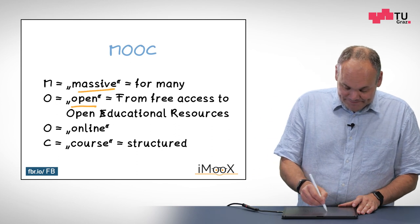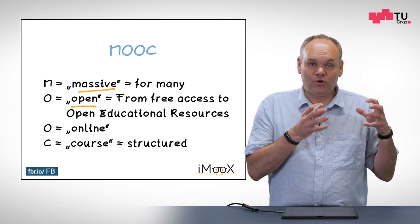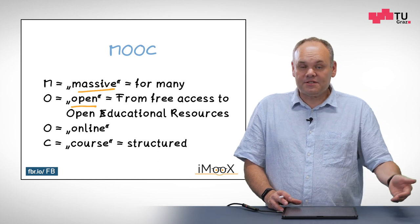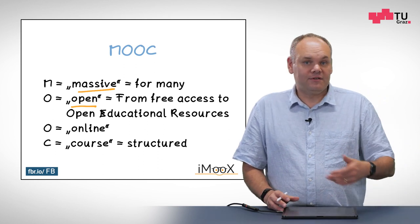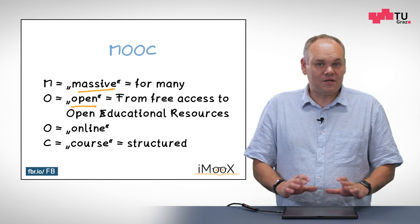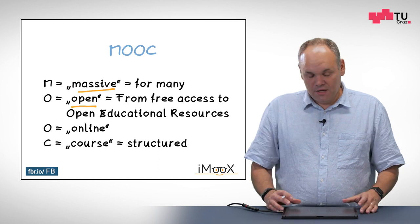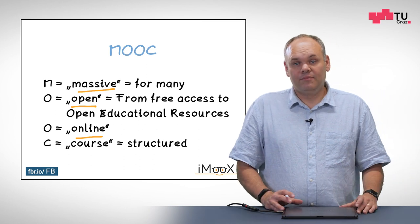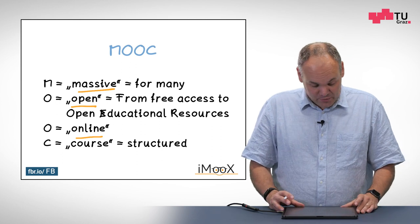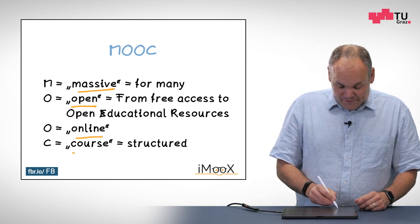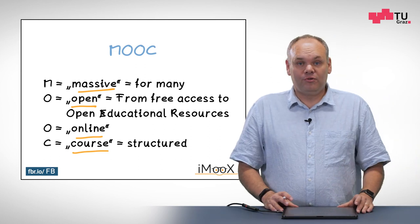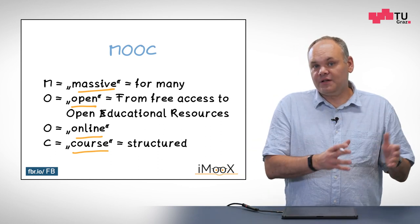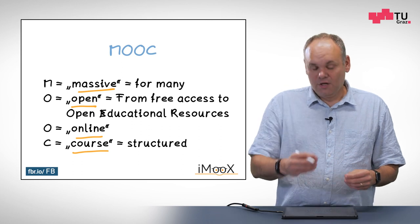O is for Open, which means the learning content will be freely available. You are able to just access the course and learn without paying anything. The idea is that we are really bringing learning content to the masses. The second O is clear — it's an Online course, completely online, so you can sit anywhere and take the course. And C means Course — not just a video or a PDF or a website, but a structured process that guides you through the content.